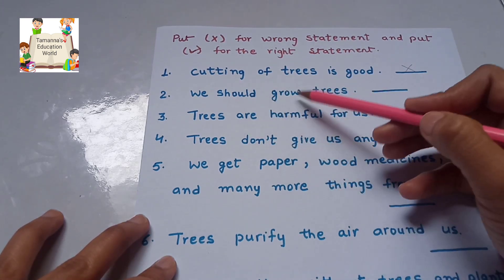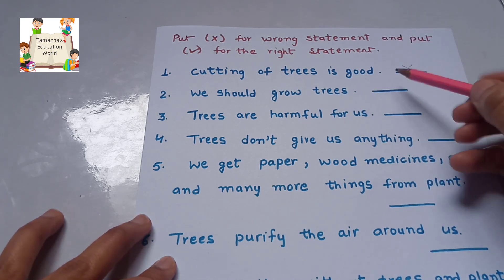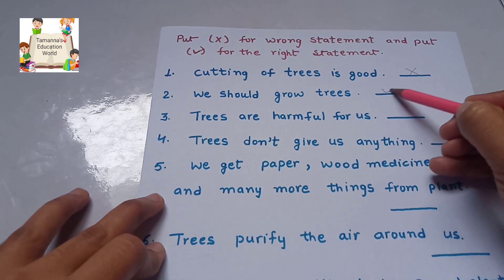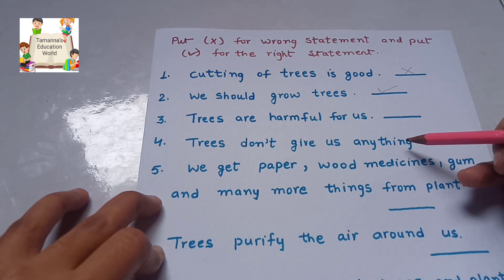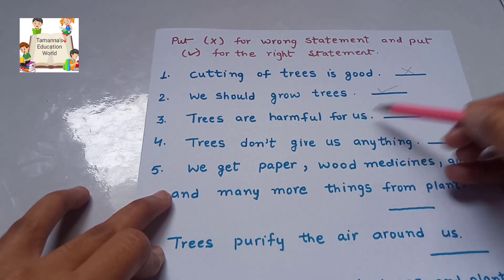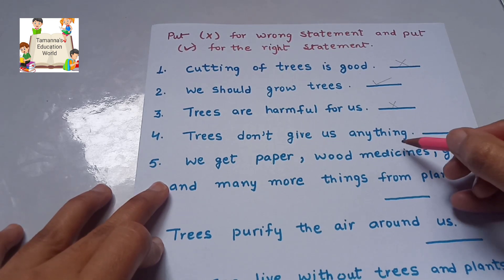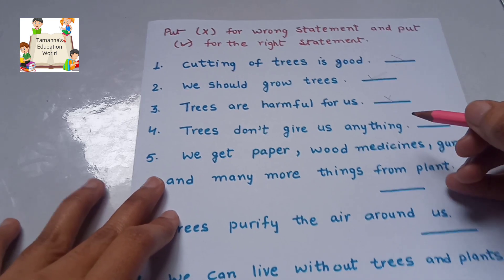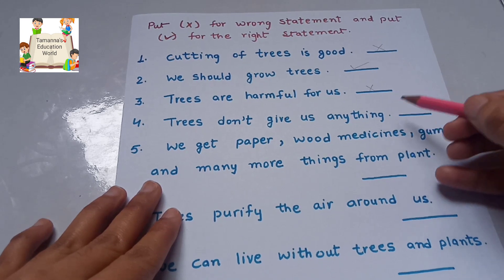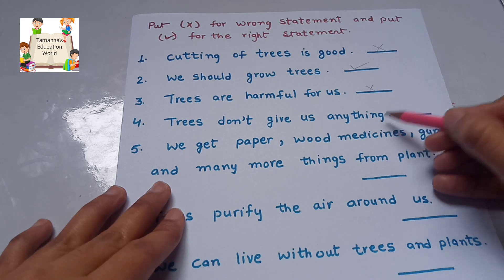We should grow trees — yes, this statement is right. Trees are harmful for us — really? Are trees harmful? No. So that statement is wrong. Trees don't give us anything — do trees give us things? Yes! Trees give us fruits, vegetables, and many more things, so that statement is wrong.